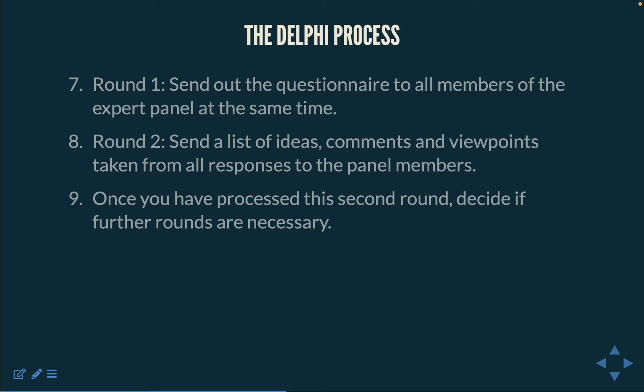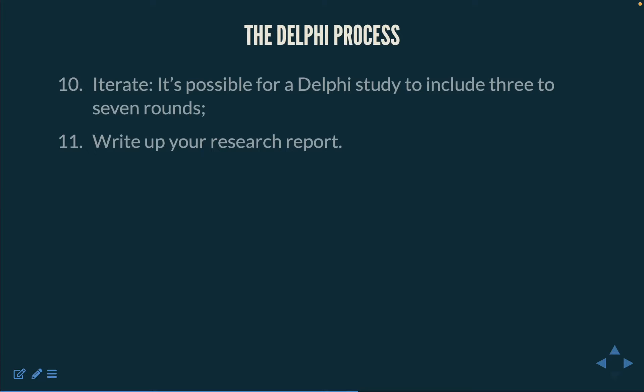The next round will synthesize the second list, ranked with additional comments. Ask panel members to rank the additional comments in the same way as they did with the first list. This process continues until consensus has been reached and no further information is being added. As data will be processed each round, it is usual for a Delphi study to include 3–7 rounds. In modified studies, the number of rounds may vary, but it is necessary to provide a robust justification for the modifications.